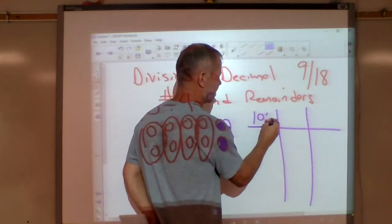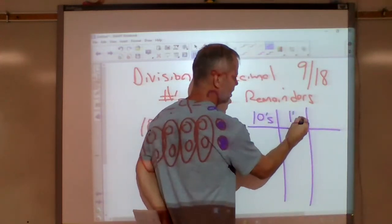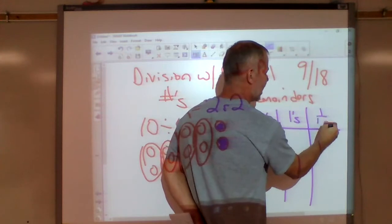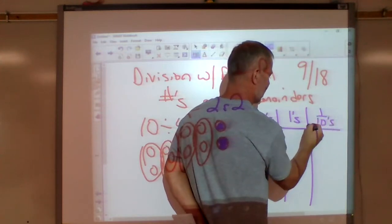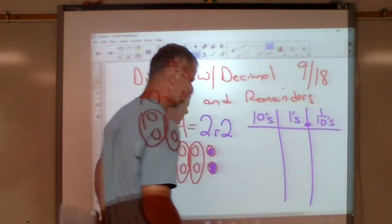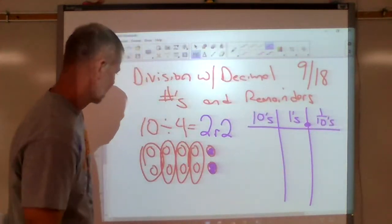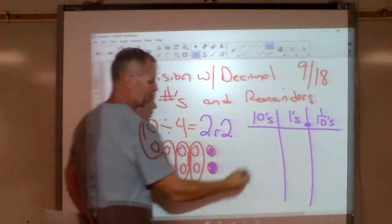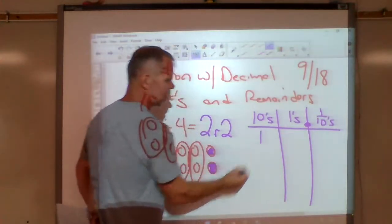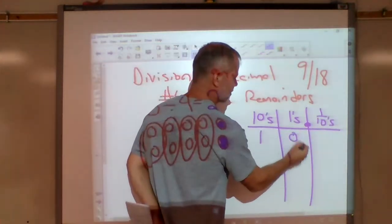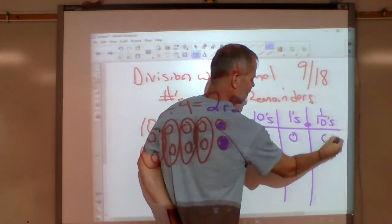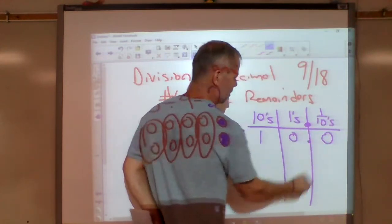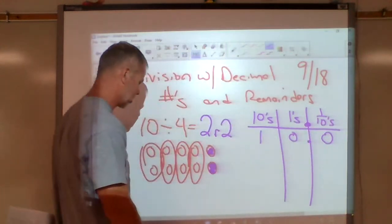There's another way we can do it. We've seen this in the place value chart now a couple of times. Tens, ones, tenths — that means the decimal point goes there. Ten divided by four means one in the tens and zeros everywhere else.